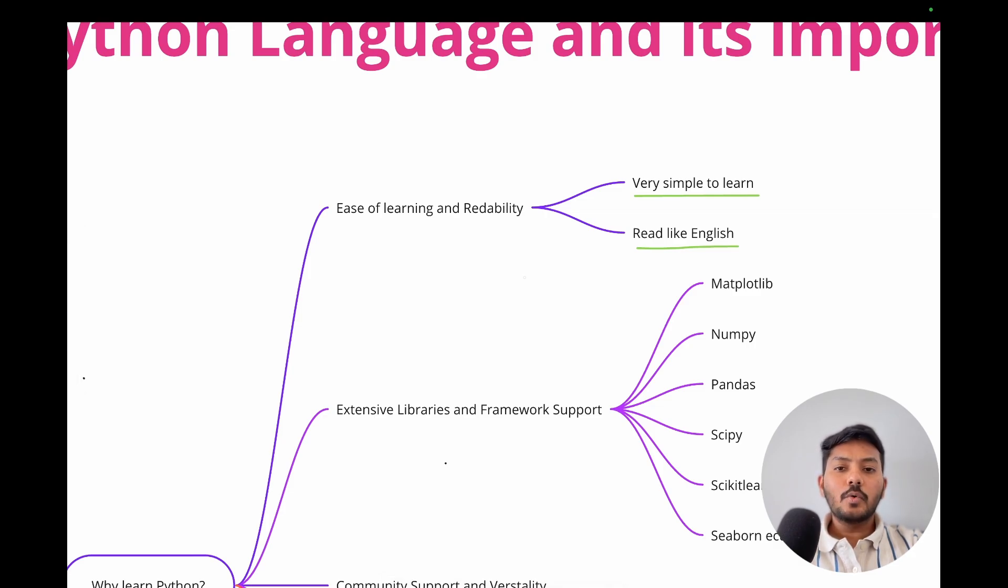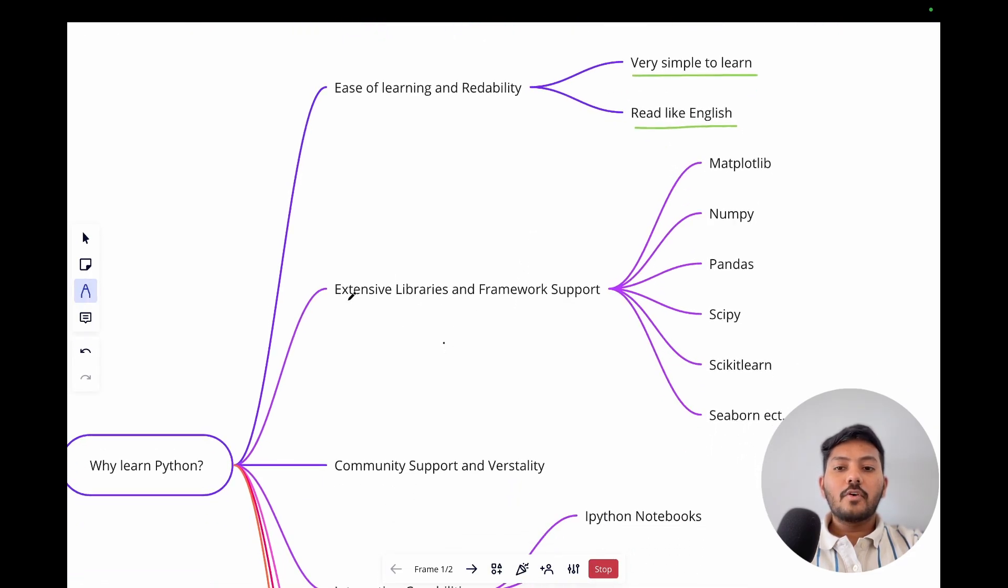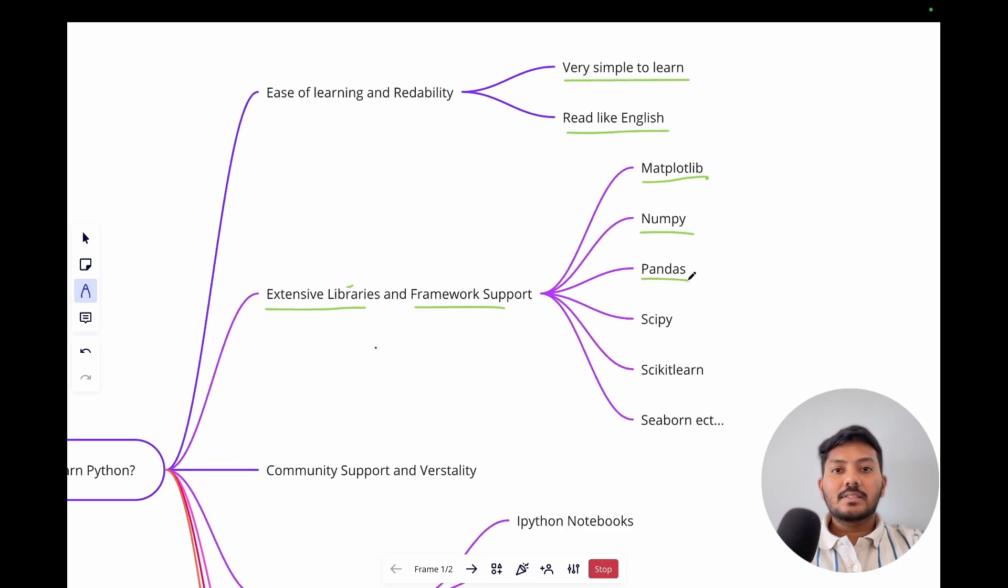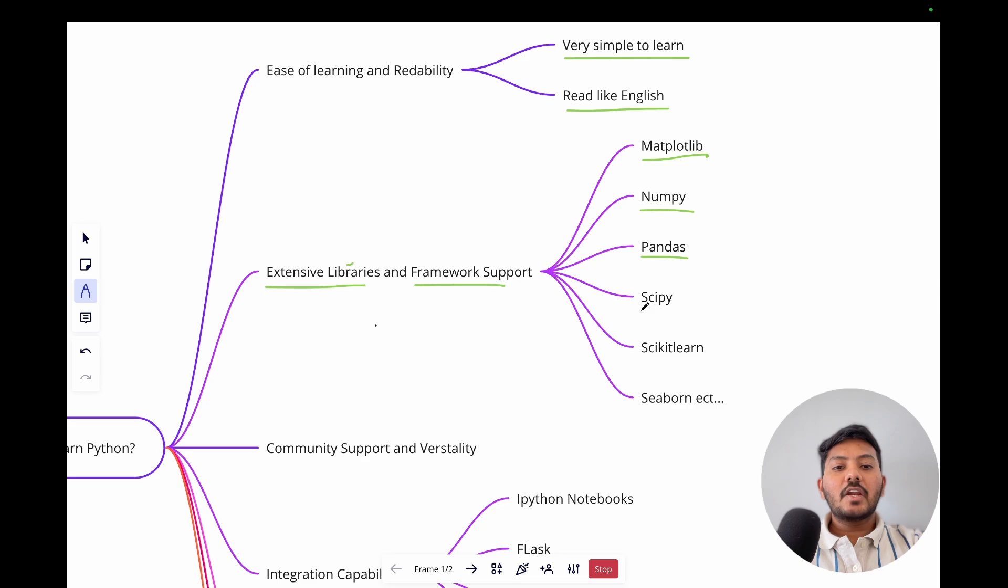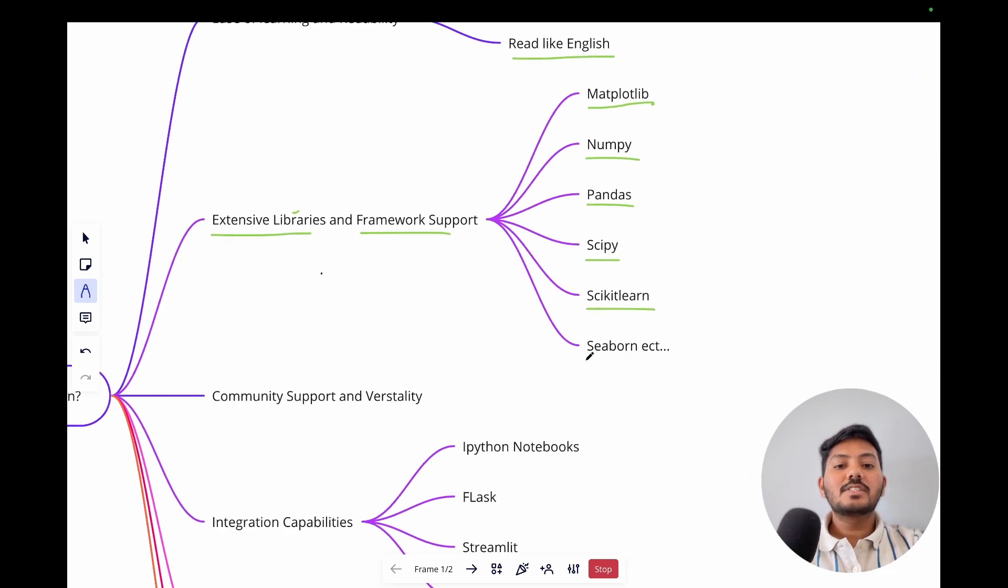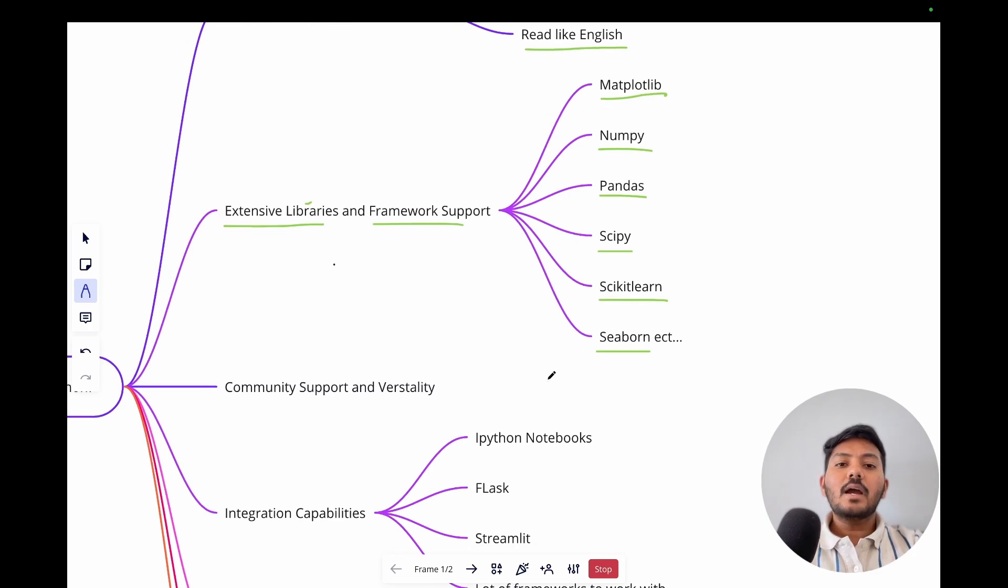Python also offers extensive library and framework support. Libraries are basically pre-coded logics that you can reuse in your workflows. You don't need to code everything from scratch. Examples include Matplotlib for plotting data, NumPy for numerical operations, Pandas for data frames and key operations, SciPy for mathematical operations, Scikit-learn for machine learning tasks, and Seaborn for data visualization. There are many other packages available in Python.